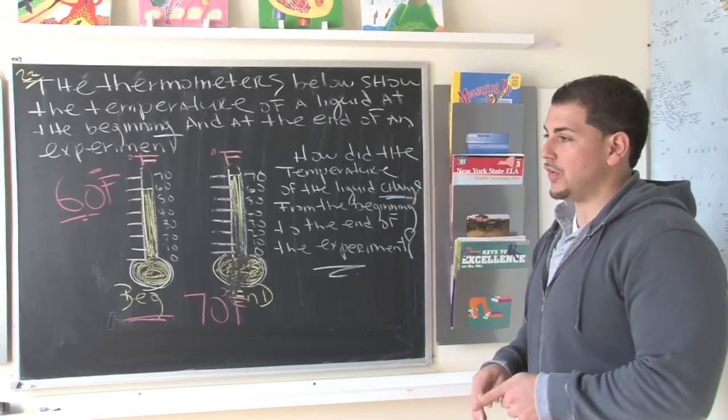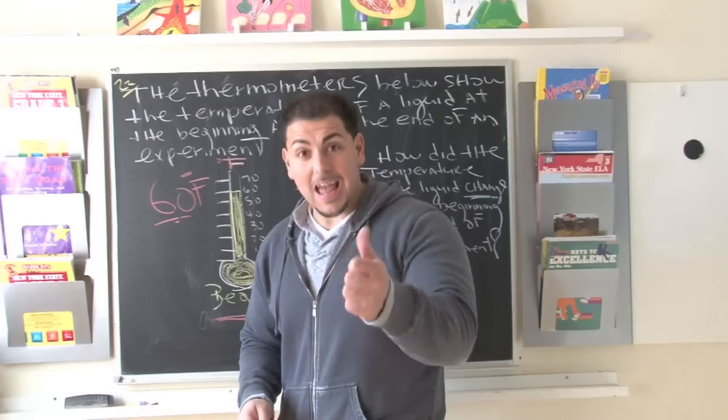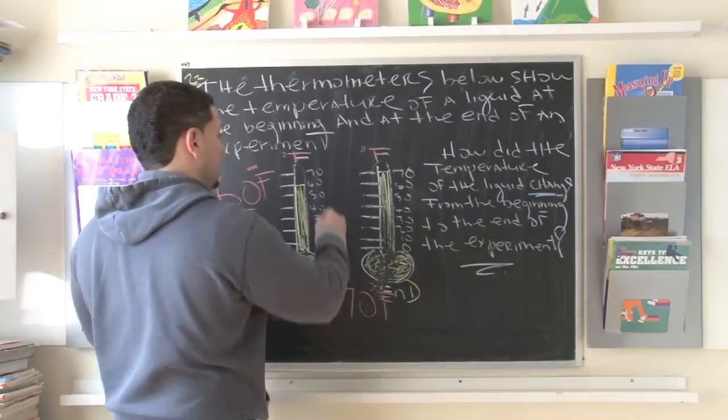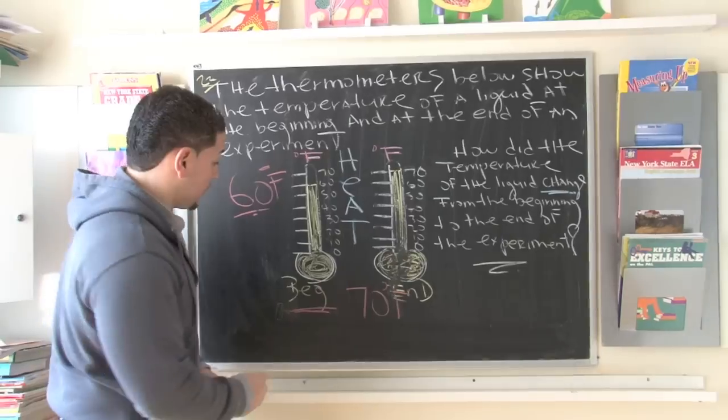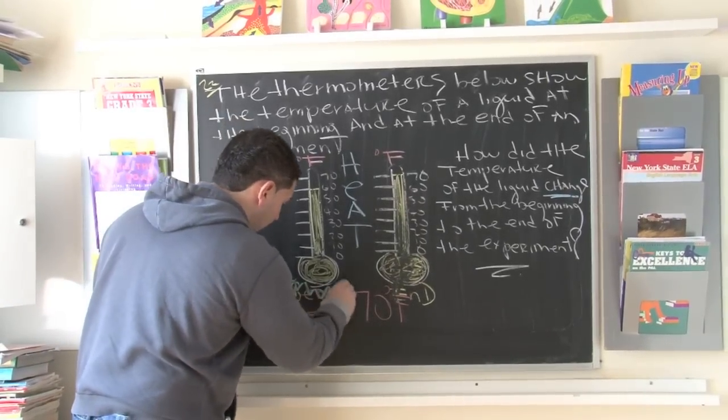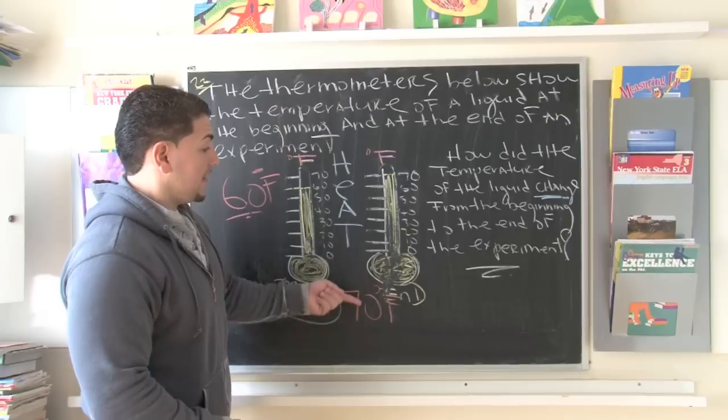Now, we know one thing about science. Whenever you see temperature change, you usually have to do with introducing some sort of agent. The agent in this case is heat. Heat is what has been introduced. So because we introduced heat, we'll make a little fire there, to the thermometer, the temperature obviously was raised to 70 degrees.